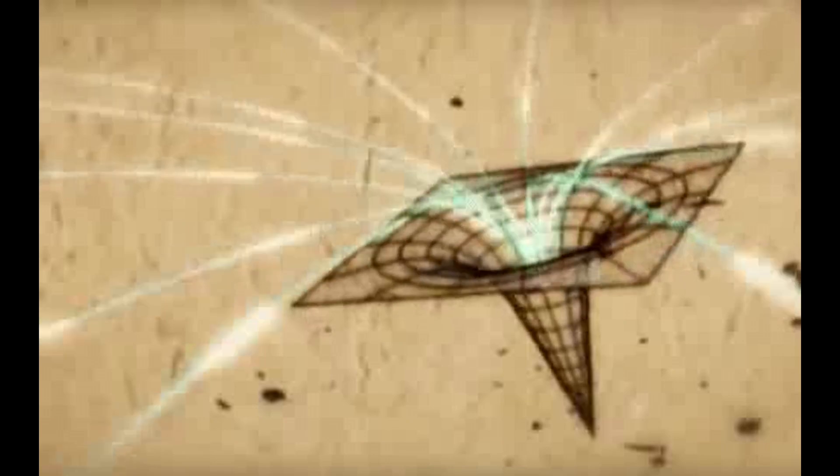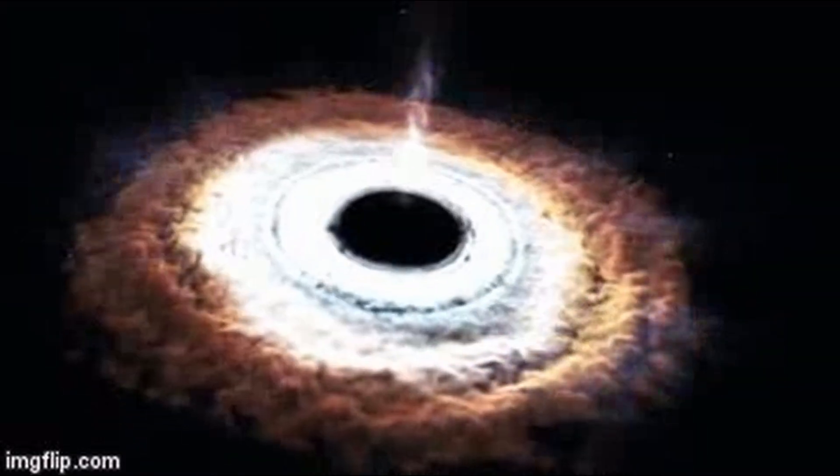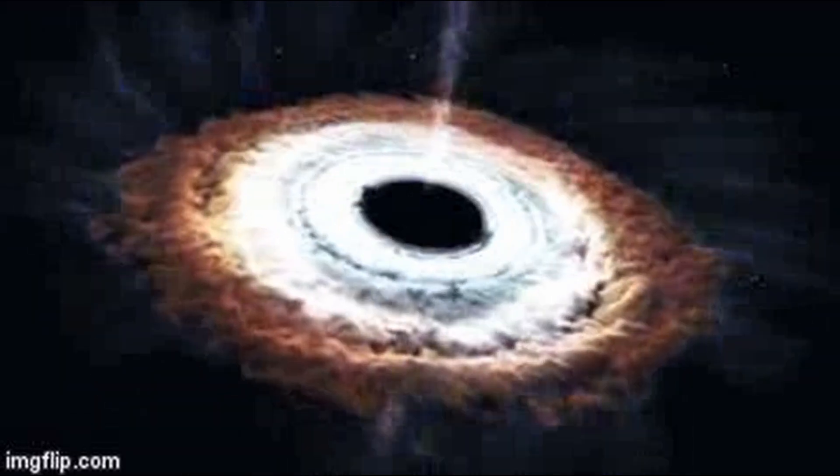Imagine a flat rubber sheet representing a two-dimensional slice of space. If we place a heavy ball on the sheet, it creates a dent or curvature. This curvature represents the effect of gravity on space — the heavier the ball, the deeper the dent. If we roll a smaller ball on the sheet, it follows the curvature created by the heavy ball, representing gravity's effect on object motion. The smaller ball moves toward the heavy ball as if attracted by a force, but there is no actual force — it is simply following the shortest path on the curved sheet.